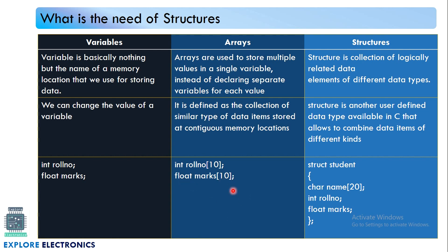However, it is still tedious to create different arrays for different data types. Arrays can store multiple values in a single variable, but those values must all be of the same data type. In the roleNumber array we cannot store marks of type float — we can only store integers. So if we have to store different kinds of data, we need to create different arrays, which is also not a suitable solution.